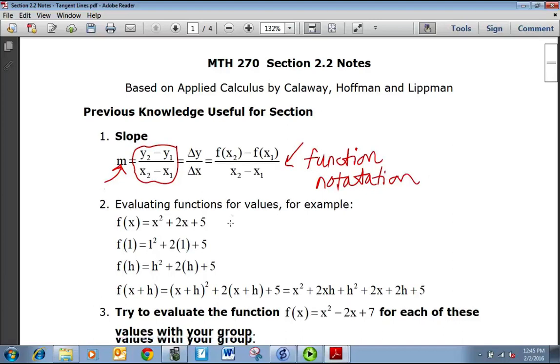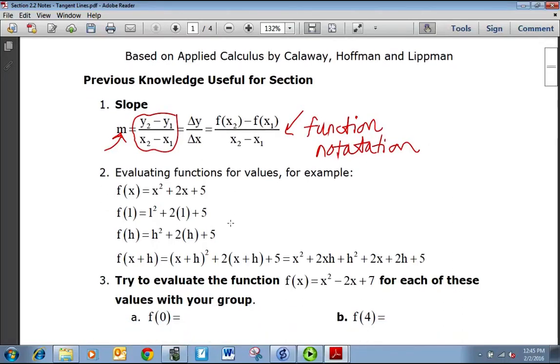Another thing is evaluating functions. If I have a function x squared plus 2x plus 5, and I want f of 1, then I plug 1 in for each value. 1 squared plus 2 times 1 plus 5 would be 1 plus 2, which is 3, plus 5, which is 8. You can just plug another variable in. Instead of x, it's now h, and there's no way to simplify that one. So f of h is just h squared plus 2h plus 5.